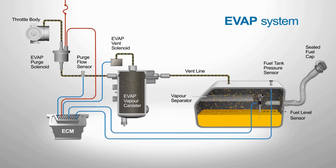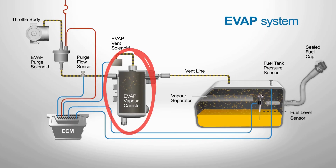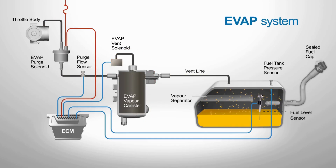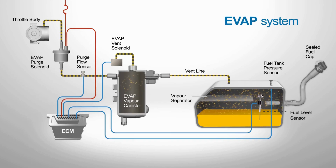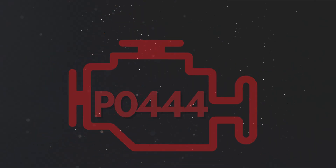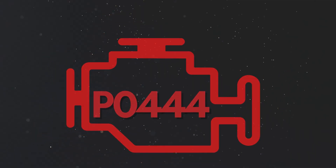When the engine is off, fuel vapors are stored in the charcoal canister instead of being released into the atmosphere. Once the engine is running and the conditions are right, the purge valve opens, allowing those stored vapors to flow into the engine where they're burned during the normal combustion process. The vent valve usually stays open, allowing fresh air to flow into the charcoal canister to ensure proper operation.